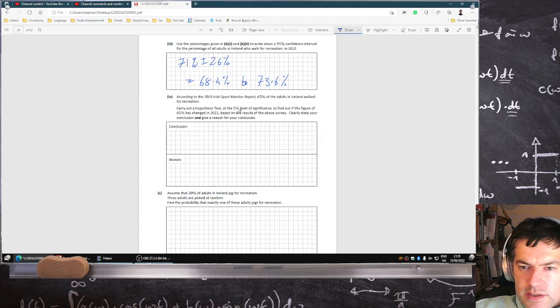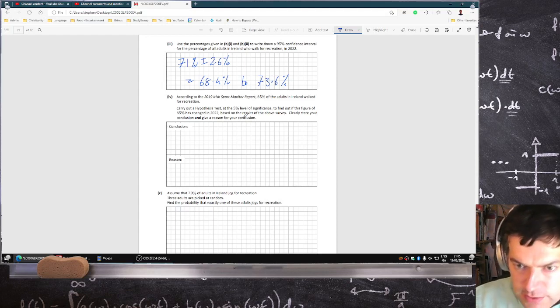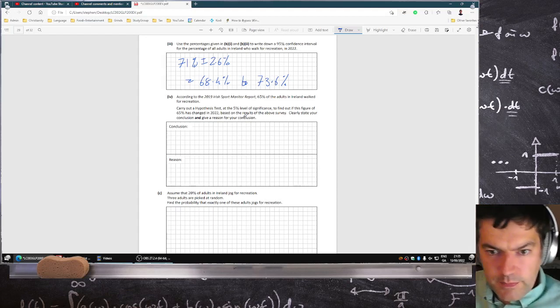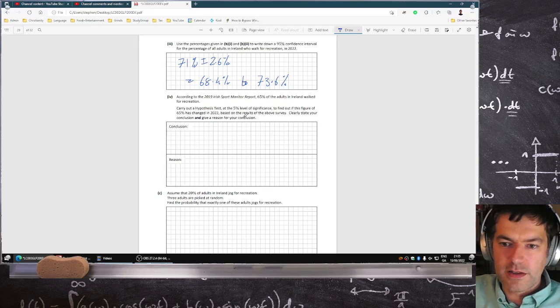According to that, carry out a hypothesis test to find out if this figure of 65% has changed in 2022 based on your results. State clearly your conclusion and give a reason. Okay, so they claimed that 65% of adults walk.